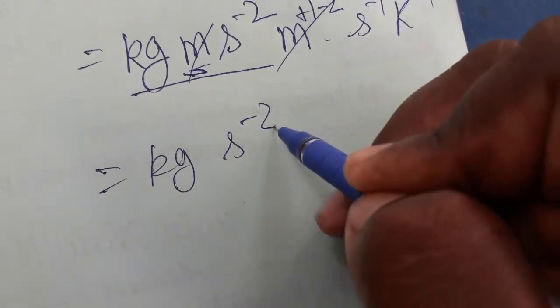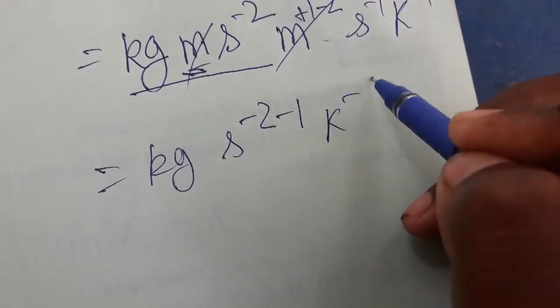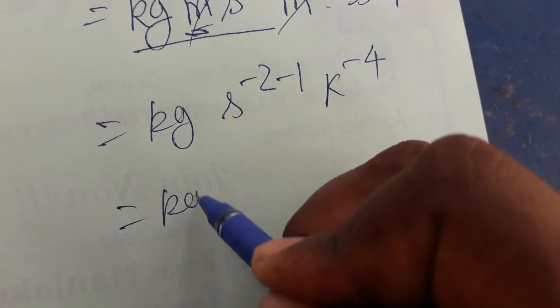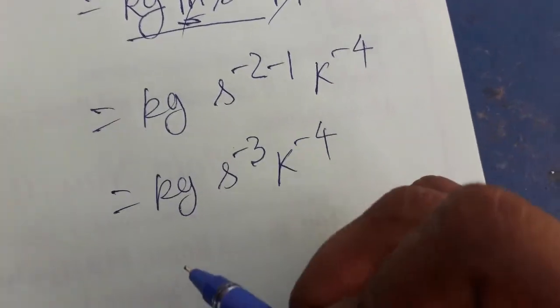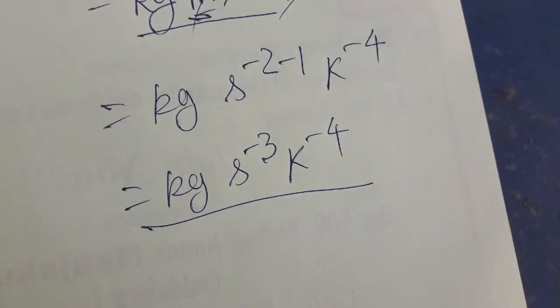So kg second minus 2 and minus 1 Kelvin power minus 4, so kg second minus 3 Kelvin power minus 4. This is SI unit of Stefan constant, thank you.